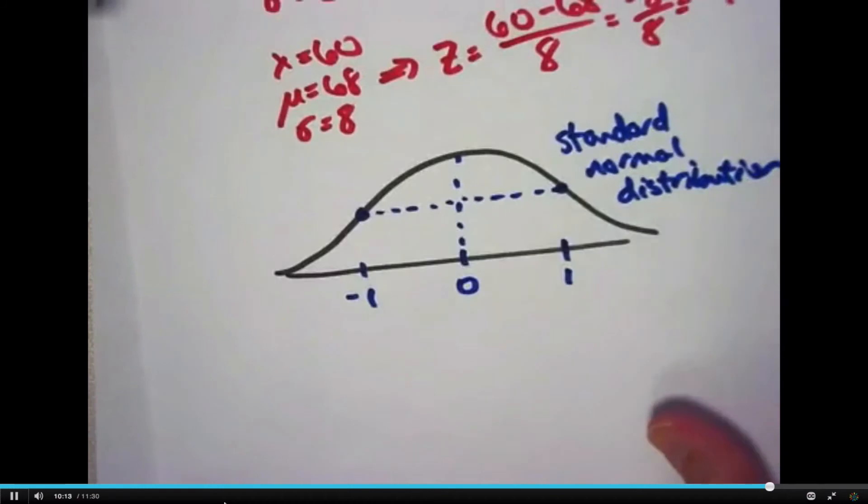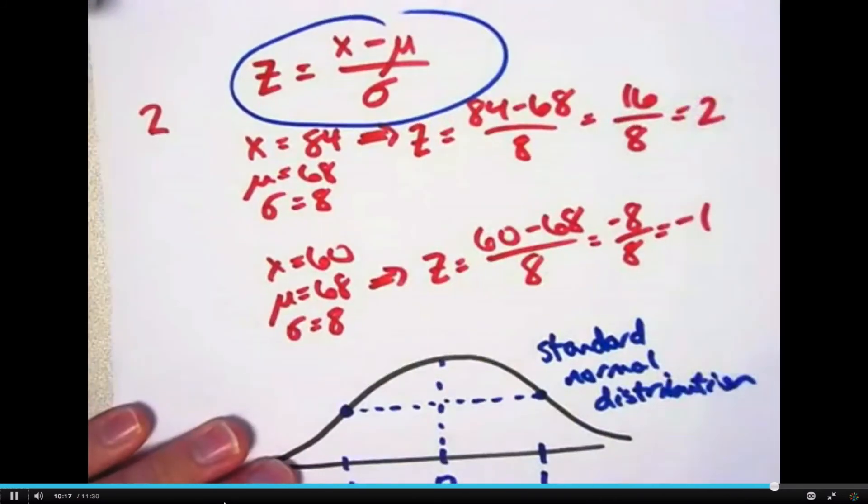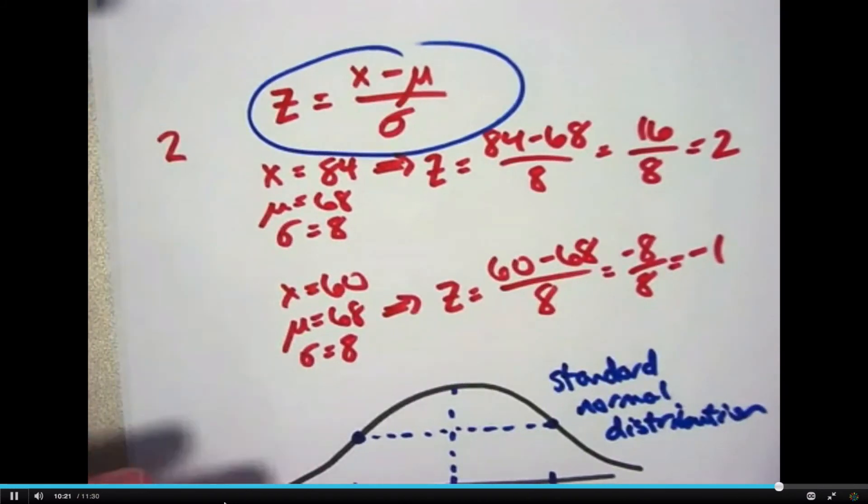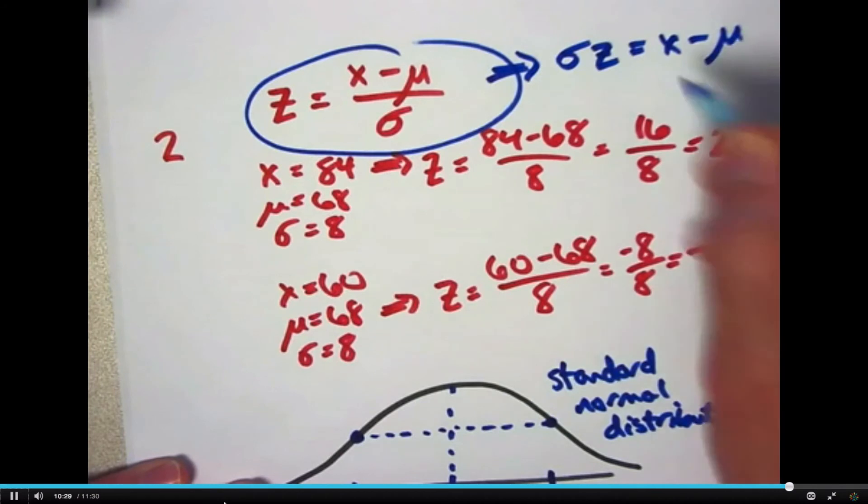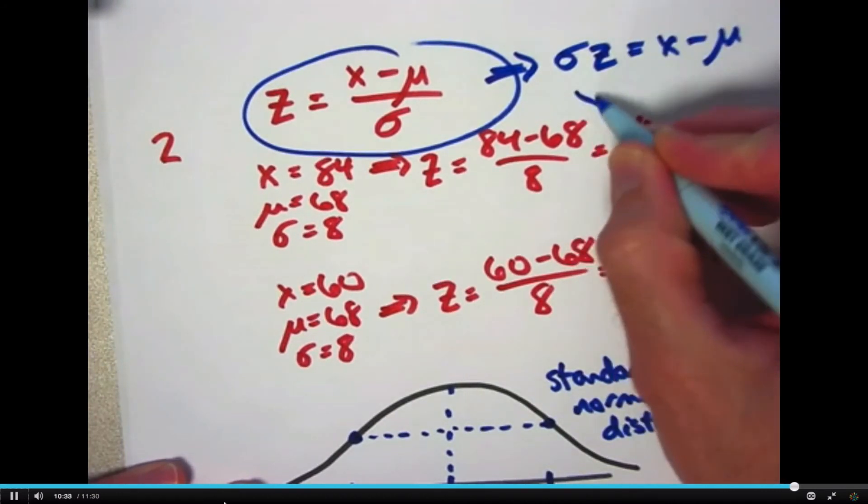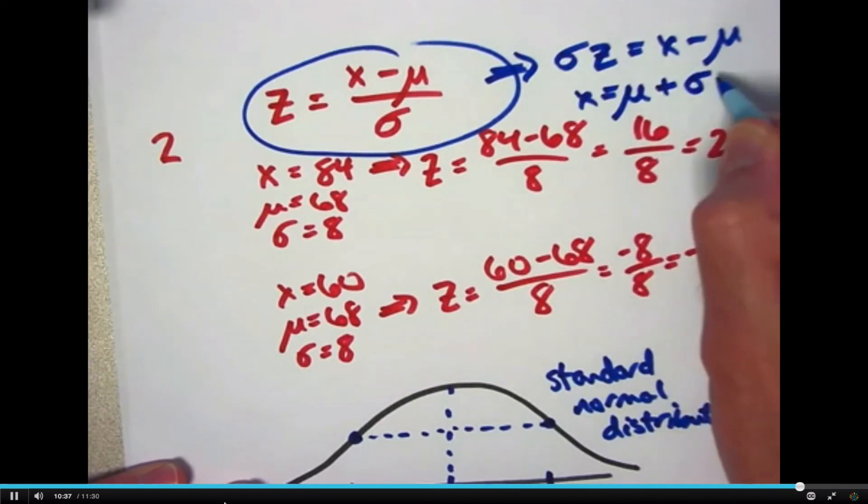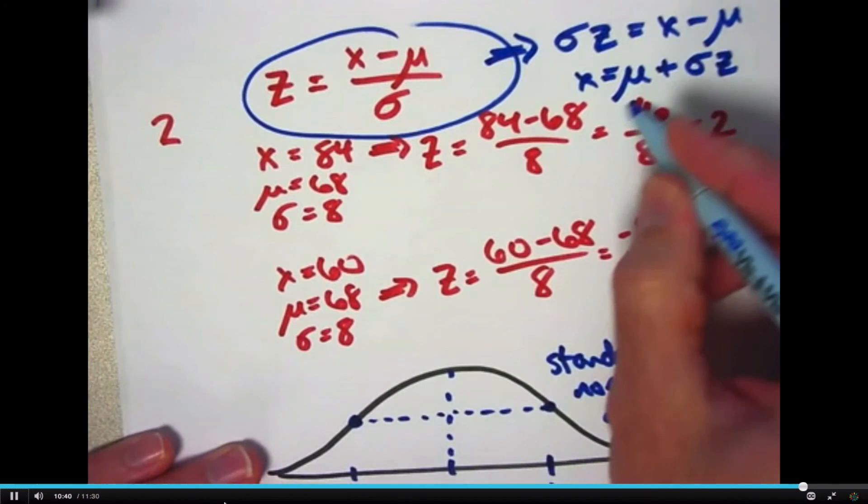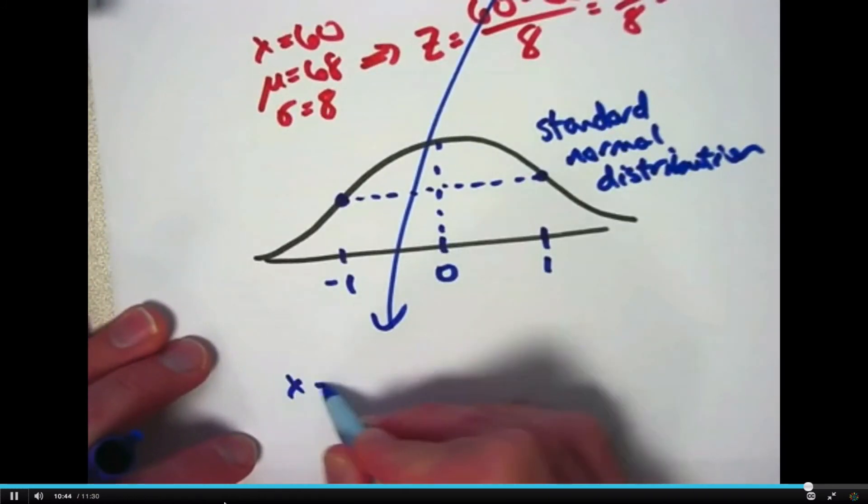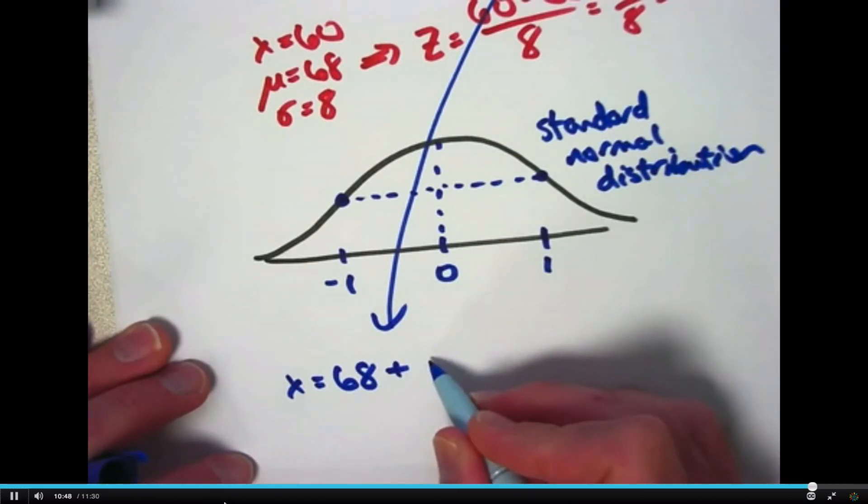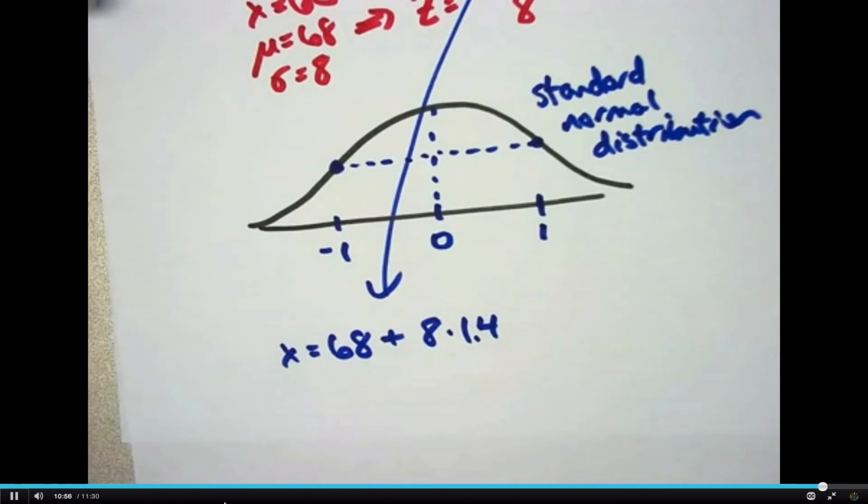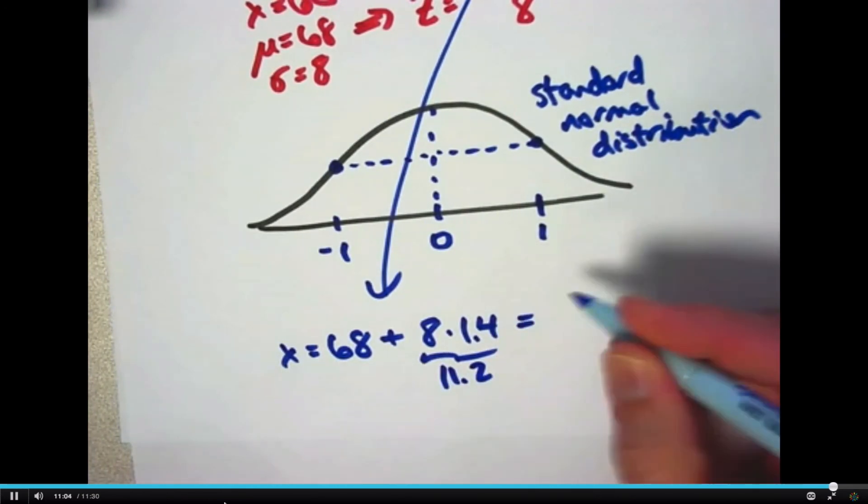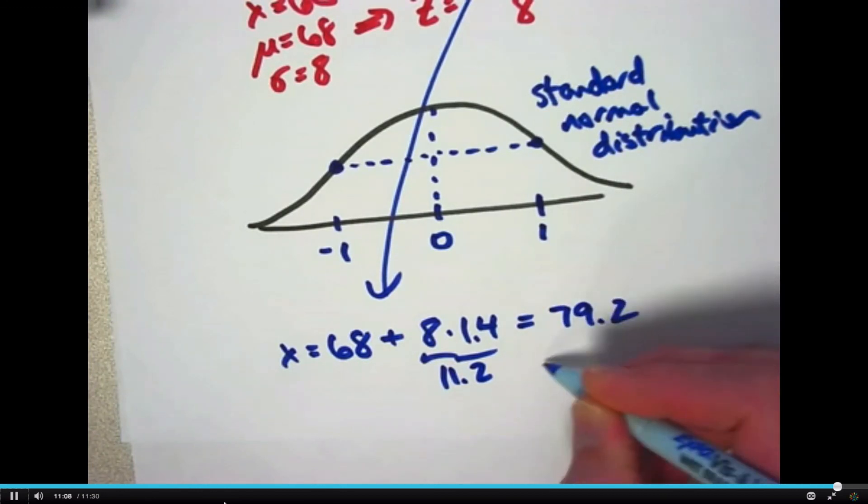And that means we can then use this equation again to figure out what x heart rate in beats per minute is when z is 1.4. In fact, I can solve this equation for x. First, multiply both sides by σ, and then add μ to both sides. And I'll do a little rearranging. x is going to be μ plus σ times z. That's the equation we need. We'll use it here real quick. μ is 68, σ is 8, and the z that's at the 92nd percentile is about 1.4. 8 times 1.4 is 11.2. 68 plus 11.2 is 79.2.